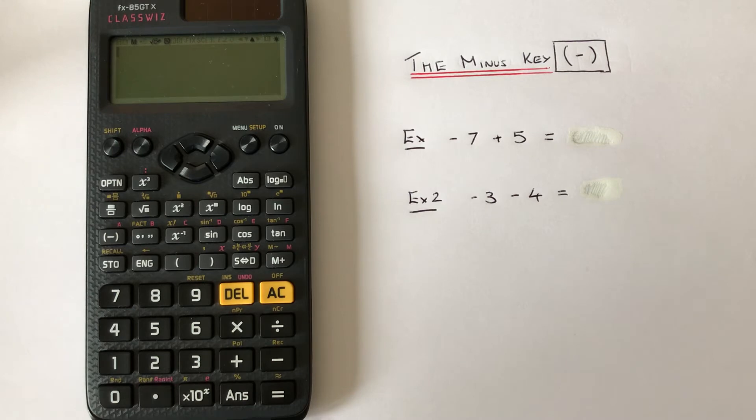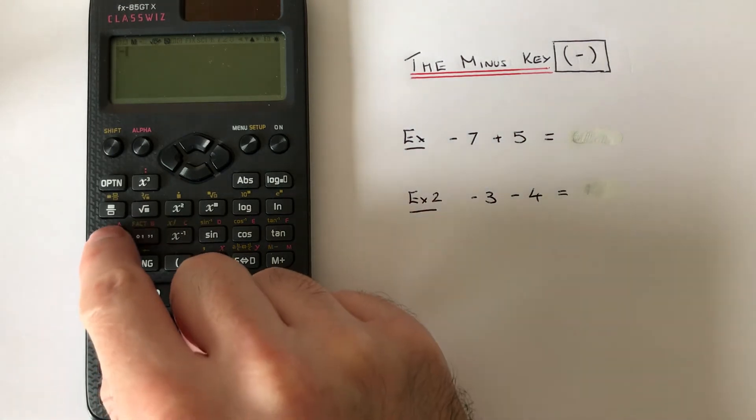Let me show you how to do this. Although I much prefer to normally use the takeaway key for a negative number, let's use the minus key for these calculations. The first one is minus 7.